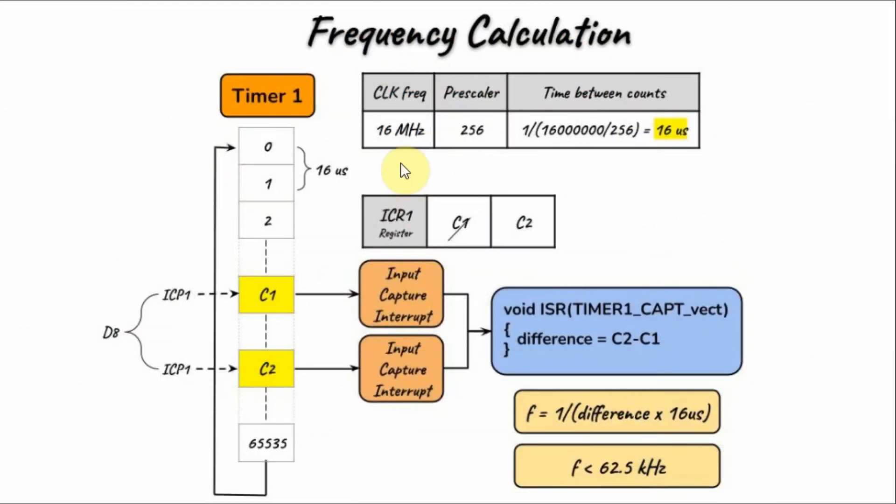Using this method, we can calculate the maximum frequency we can measure, which is 16 microseconds multiplied by 2 to the power of 16, and then 1 over the result will give us 62.5 kHz, and this would be the maximum frequency. To increase the maximum frequency, we need to lower the prescaler value.